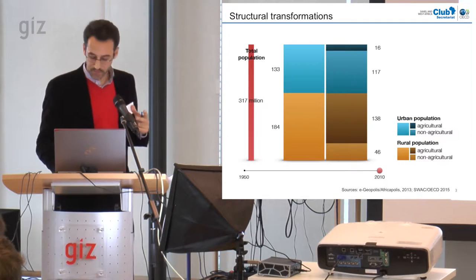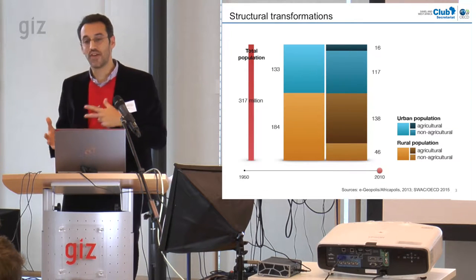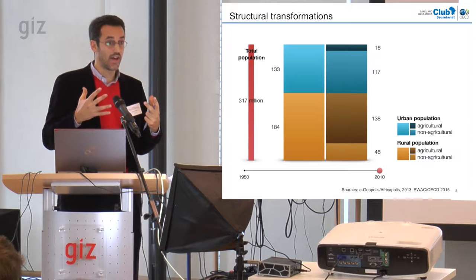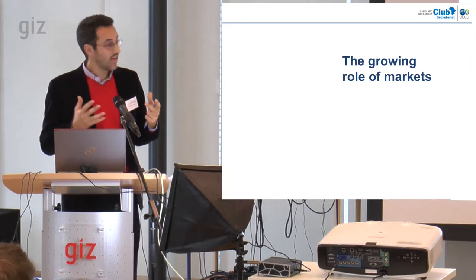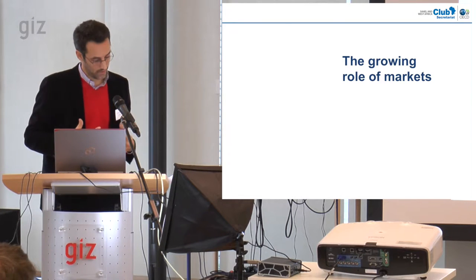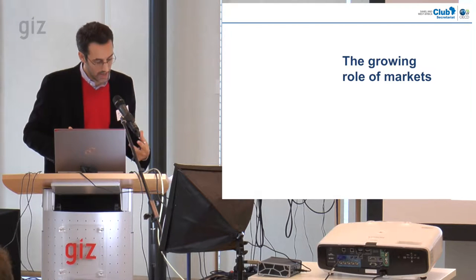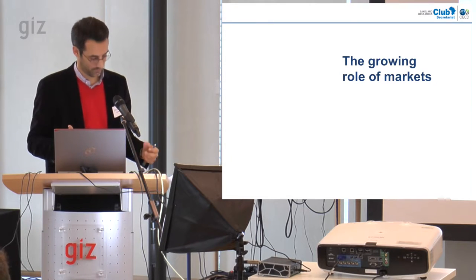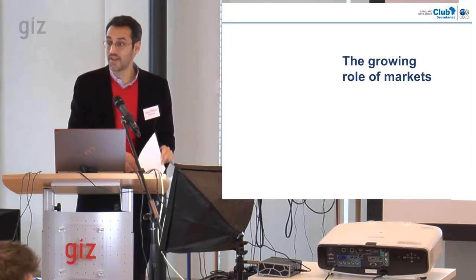When you distinguish between the agricultural and non-agricultural population, you get the first idea of the division of labor, but also a first approximation of the size of the food market. Because one of the main key stylized facts occurring in the region is that if 50% of your population is no longer engaged in agricultural activities, there has been a major transformation in the way households acquire food. Today, household food needs are increasingly being met through the market.